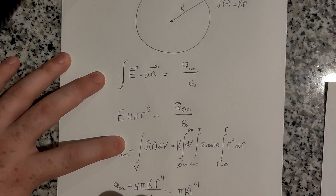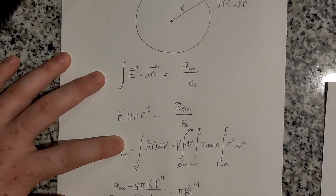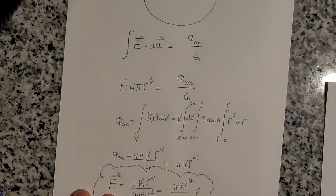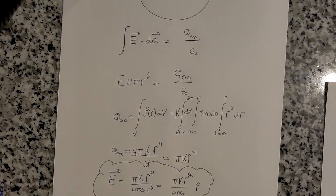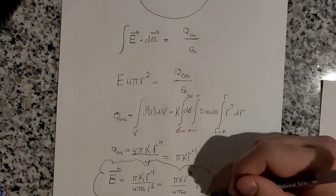So this is the answer. I'm just trying to bubble this in. So our answer is πk times r² divided by 4πε₀ directed in the radial direction.